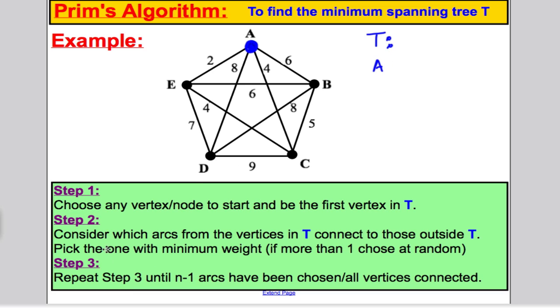Step 2 says that we must consider which arcs from the vertices in T connect to those outside T. The only thing in T currently is vertex A. Consider all the arcs that connect from A to outside A. That arc, that arc, that arc, or that arc we're to consider. Pick the one of smallest weight. The one of smallest weight is this one here, it's 2. So I'm going to include this in my spanning tree. T has A, E as an edge with weight 2.